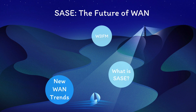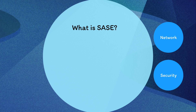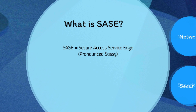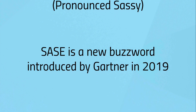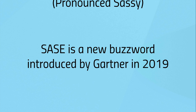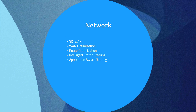This change is prompting us to look at things differently, and this is where SASE comes in. SASE stands for Secure Access Service Edge. It's pronounced 'sassy.' It's a new buzzword introduced by Gartner in 2019, and it's a combination of network plus security.